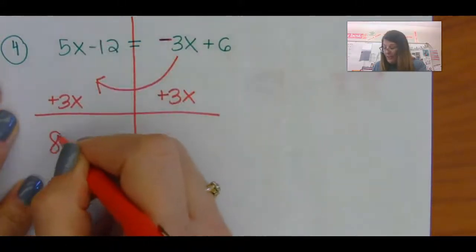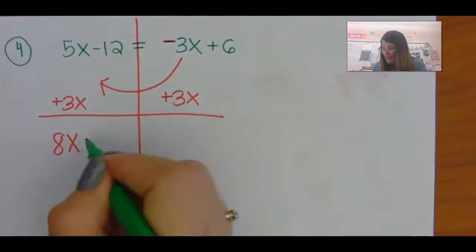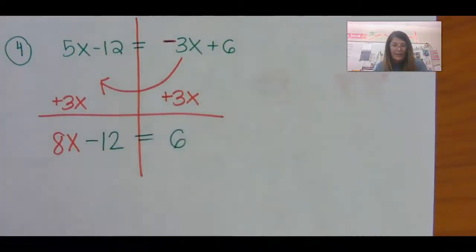So on the left, I will have 8x, but I'll still have this minus 12 is equal to 6.